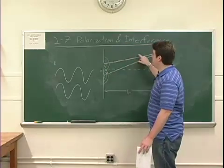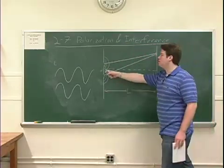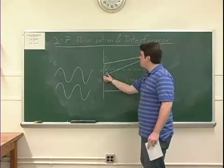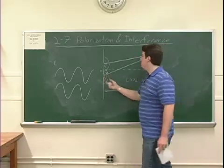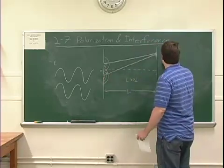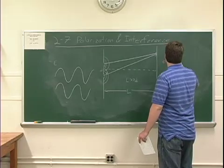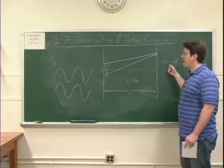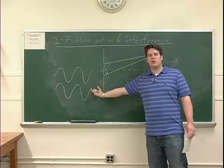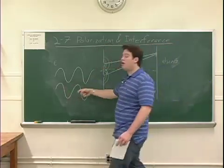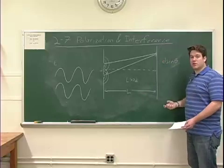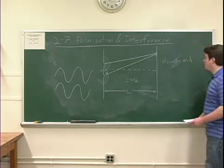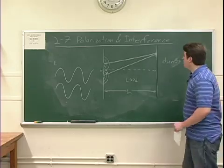The path difference between these two, if this L is very, very large compared to d, the path difference just ends up being this small bit right here, which, using properties of right triangles, we can say is d sine theta. For constructive interference, we want this path difference to be equal to an integer number of wavelengths so that the crests and troughs still line up with each other and we get constructive interference. In that case, we can set this equal to m lambda. Now...